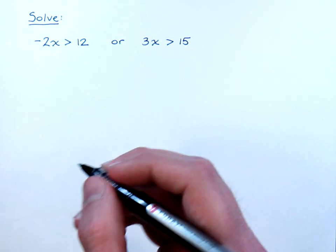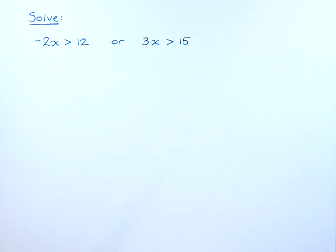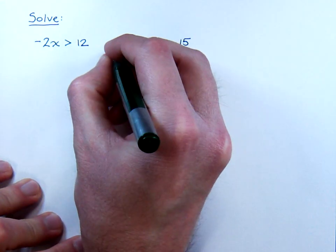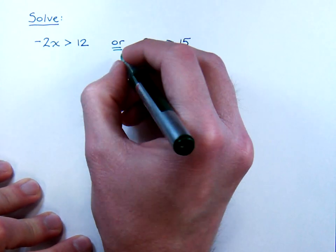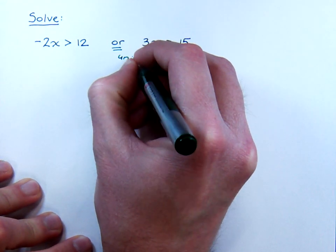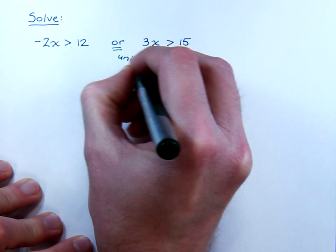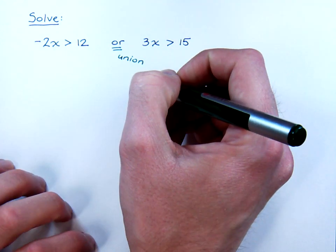These look simple enough, but don't be deceived. You can very easily lose sight of what's going on if you're not careful. You've got the word or here, and remember, when you see the word or in inequalities, that means we're talking about a union. And remember, union means put everything together.